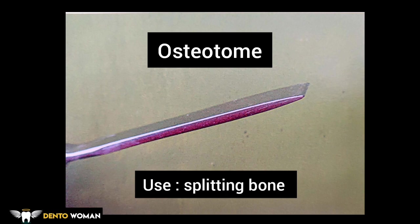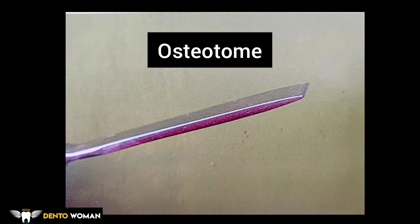The cutting edge is bi-beveled, which converges to form a sharp edge. This is an important MCQ: the osteotome is bi-beveled and it is used for splitting bone when used along with a mallet.